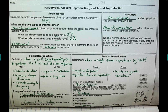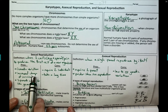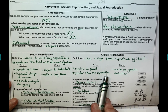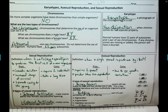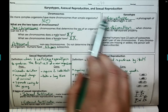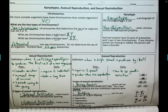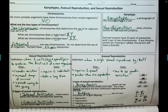That's it for our notes on sexual and asexual reproduction, with a quick recap of our chromosomes. If you have any questions or concerns about these notes, please make sure to let me know. Thanks.